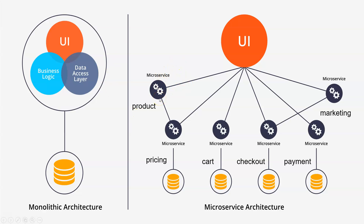Now you can see we have different microservices and you can work on each one independently. Your product microservice is communicating with the pricing microservice and both are using the same database, but the cart microservice is independent and has its own database, similarly with checkout. Basically, you break down your big application into small modules and each module becomes a microservice.